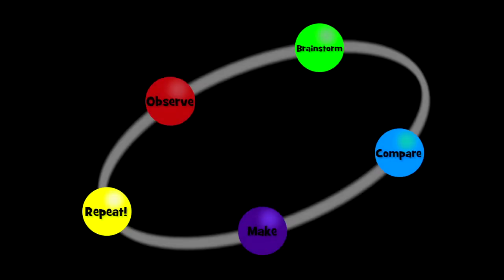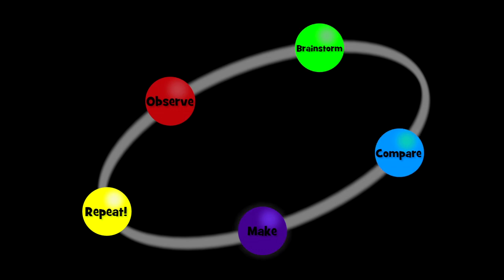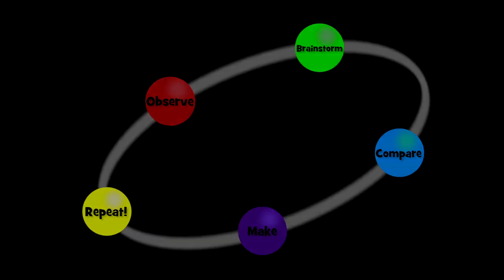In this video, we're going to go over an example design process. The steps that we're going to cover include observing the world around you, brainstorming solutions, comparing ideas, making prototypes to test ideas, and repeating steps — all to solve a problem.